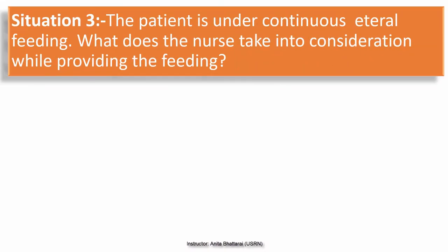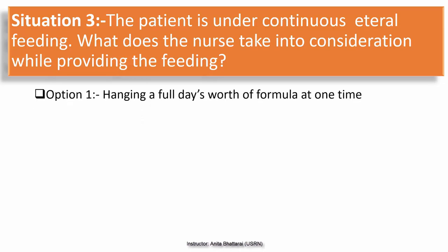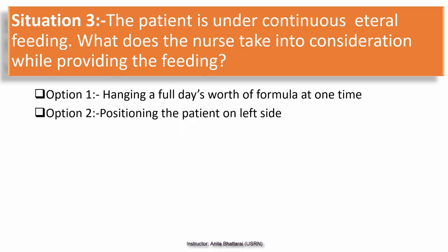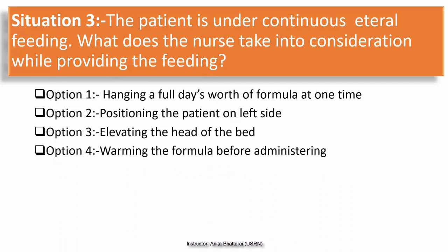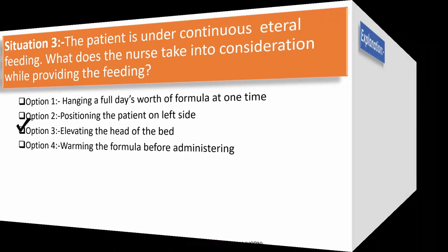Situation 3. A patient is under continuous enteral feeding. What should NOT be taken into consideration while providing the feeding? Option 1: Hanging a full day's worth of formula at one time. Option 2: Positioning the patient on the left side. Option 3: Elevating the head of the bed. Option 4: Warming the formula before administering. You can guess the answer.